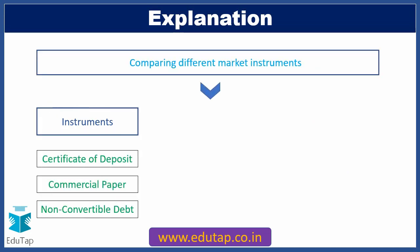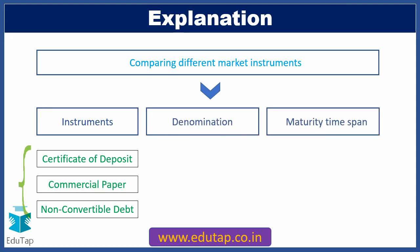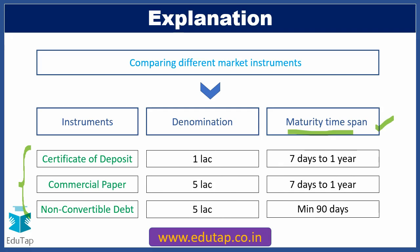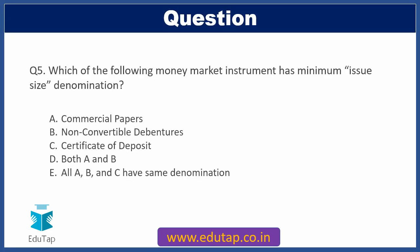In this slide, all instruments from the options of question five are listed for comparison of their denomination issue size, along with their maturity time span. By observing this slide, you can conclude that the denomination size of a certificate of deposit — at 1 lakh — is clearly the lowest among all three options. So, comparing all three instruments, the certificate of deposit has the minimum denomination issue size, making Option C the correct answer.